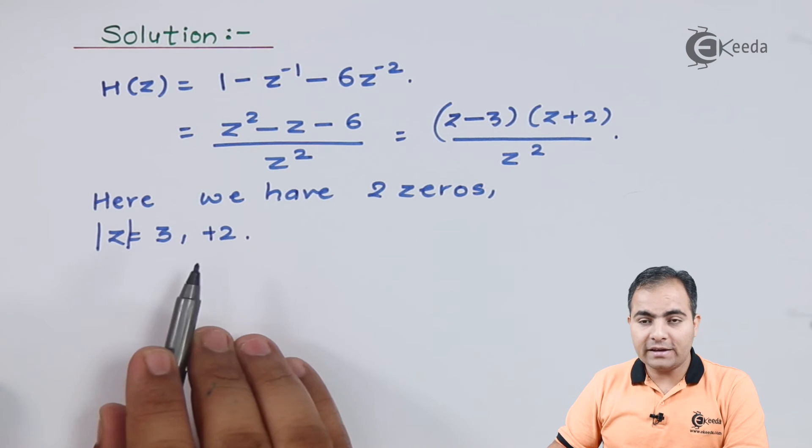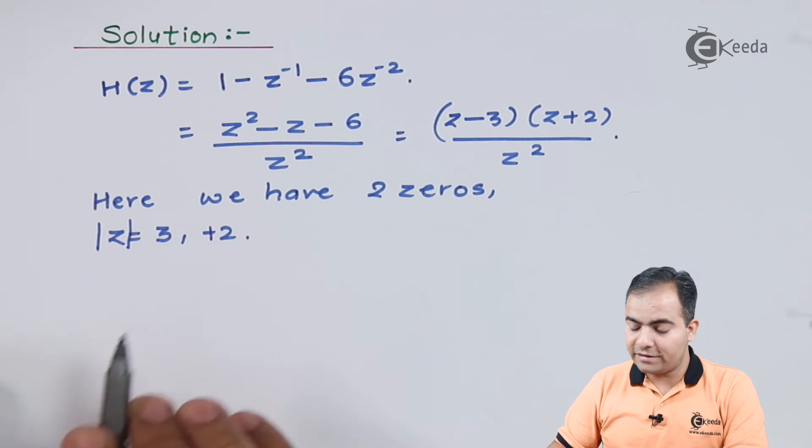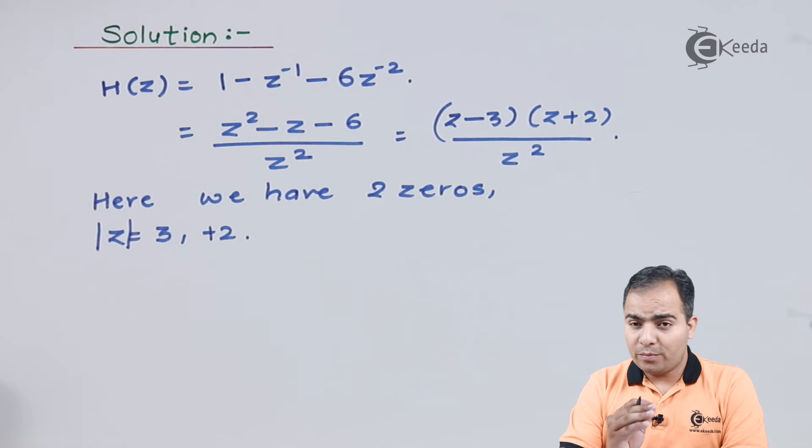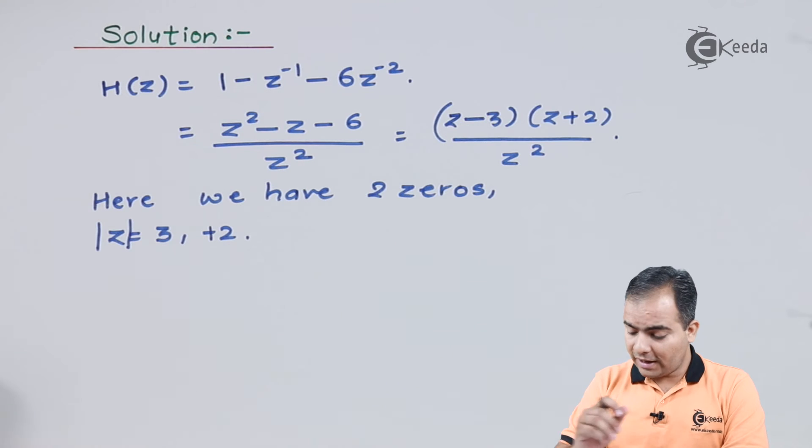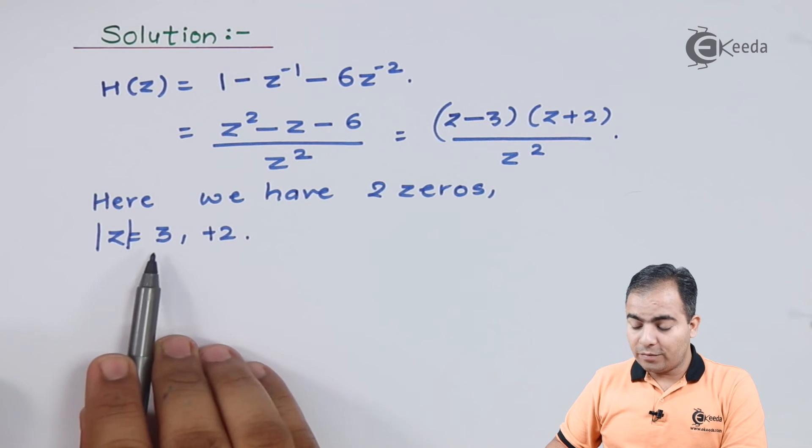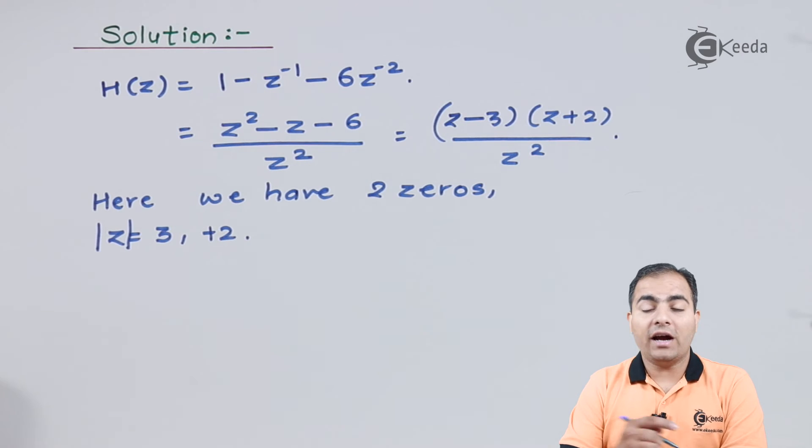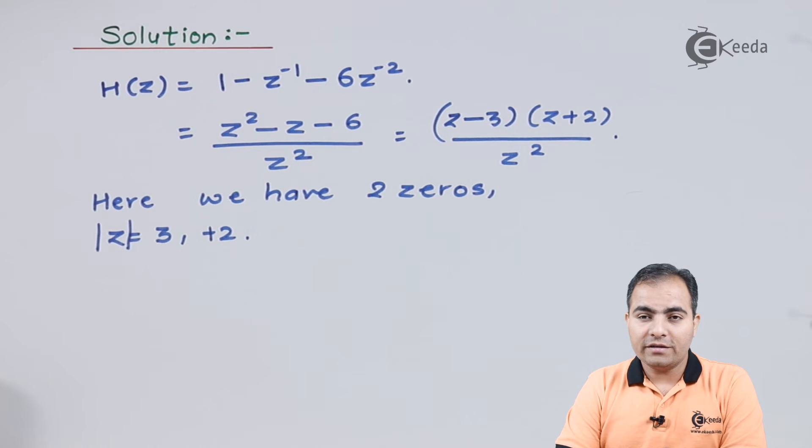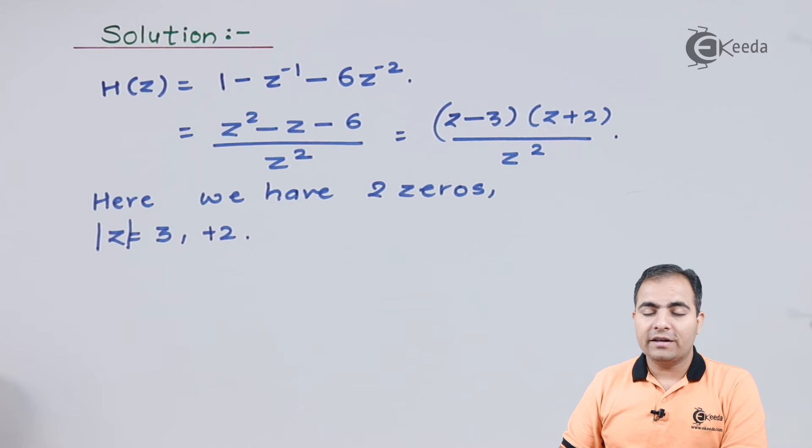We have two radius circles: first radius is 3, second radius is 2. From this I can say that both the zeros are lying outside the unit circle, which means this H(z) is a maximum phase system.